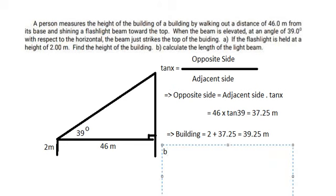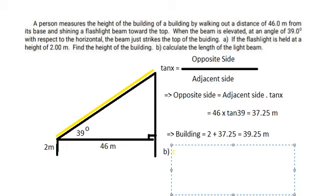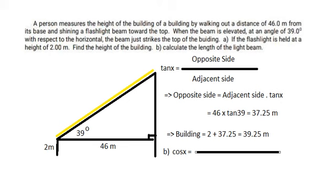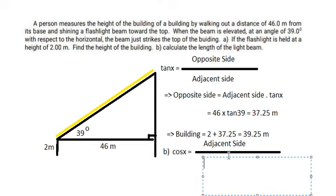Now for question B, we need to calculate the length of the light beam, which is this side here. To do this, we will use cosine. Cosine x equals the adjacent side over the hypotenuse side.